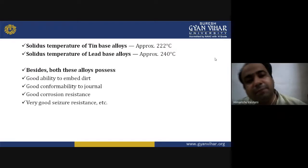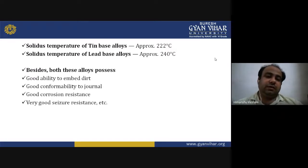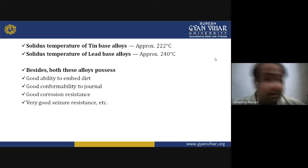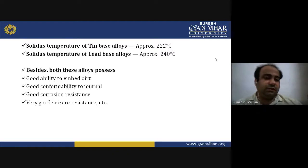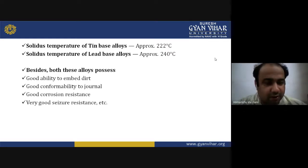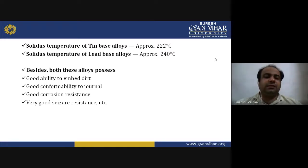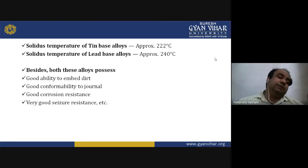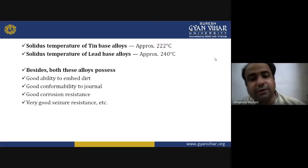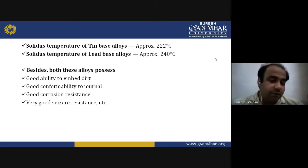The solidus temperature of tin based alloys is about 222°C, and for lead based alloys it is around 240°C. Both these alloys possess good embeddability, good corrosion resistance and very good seizure resistance. These features make them applicable for various industry uses.